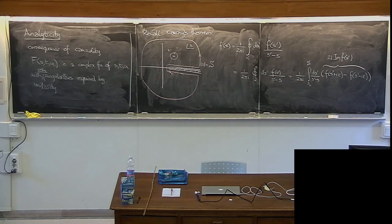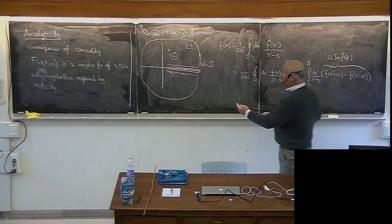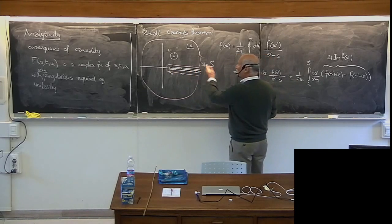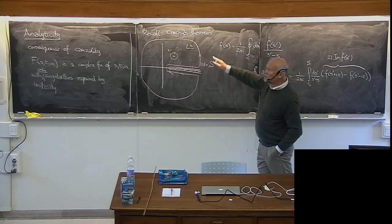We can make use of the optical theorem because the optical theorem says that the total cross-section which you measure is related to the imaginary part of the forward scattering amplitude. So by measuring the total cross-section, you know the imaginary part of elastic amplitudes from threshold to wherever you measure it. If the amplitude goes to zero at infinity, then you know the function everywhere.